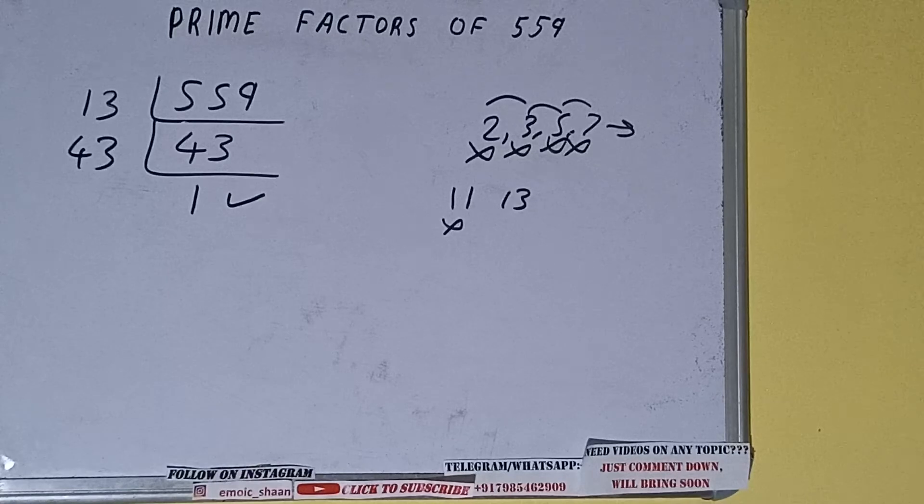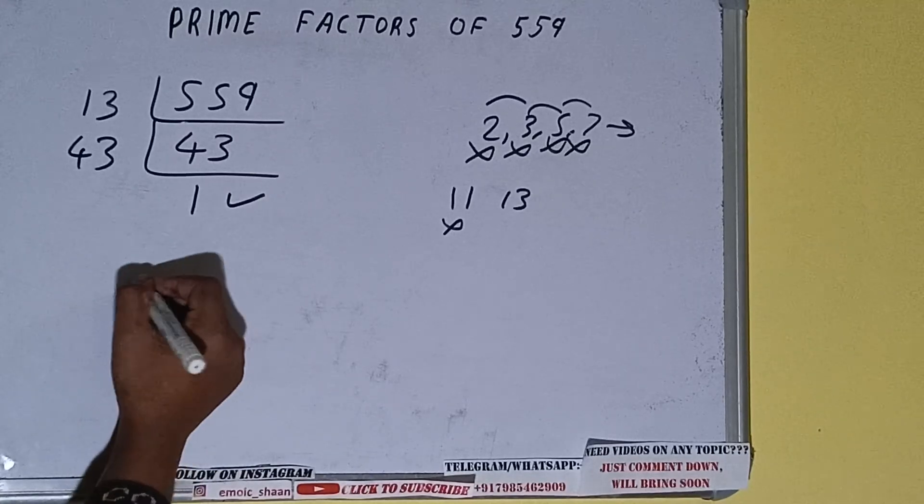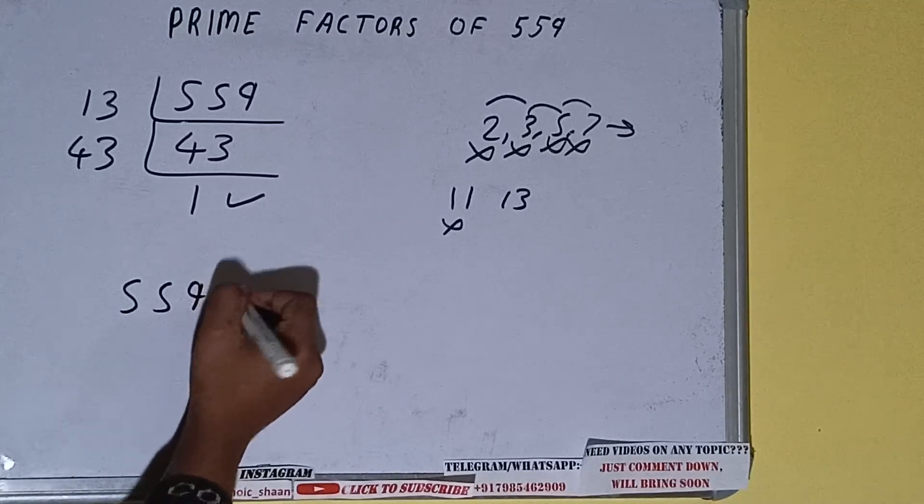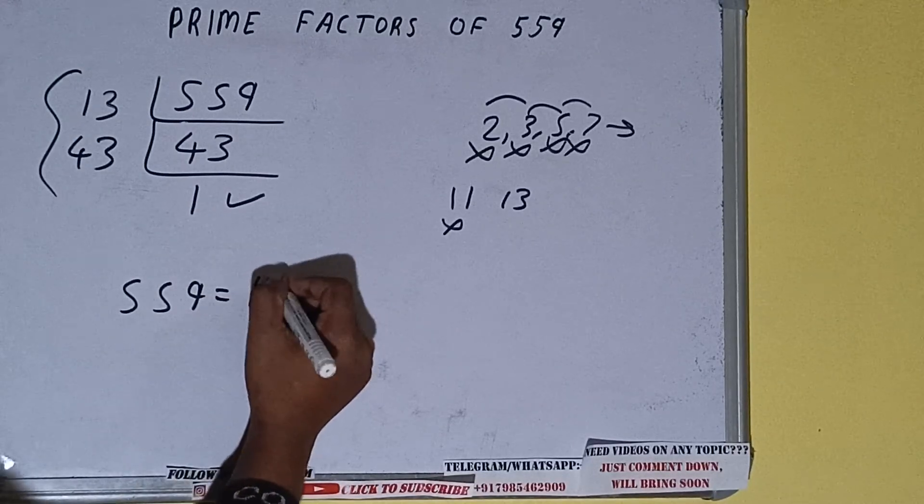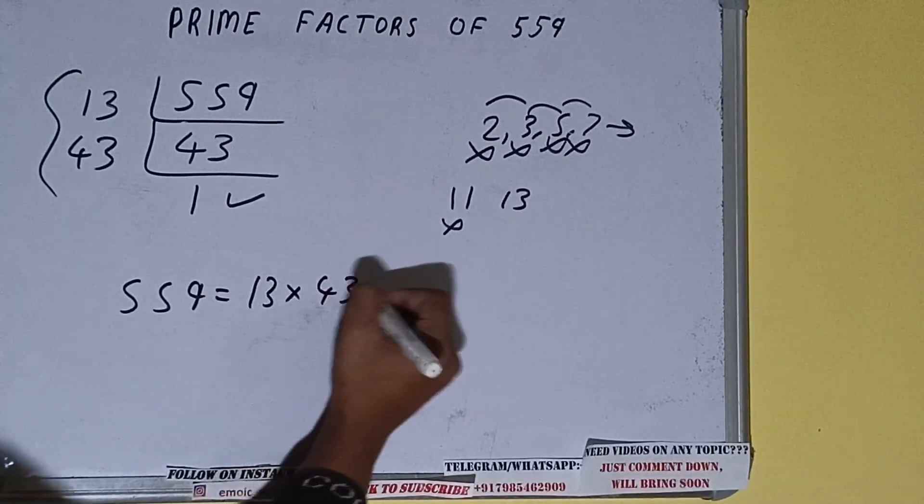Once we get one, we need to stop and do one last thing. That is, prime factors of 559 equals whatever we have on the left-hand side, that is 13 times 43. That will be the answer.